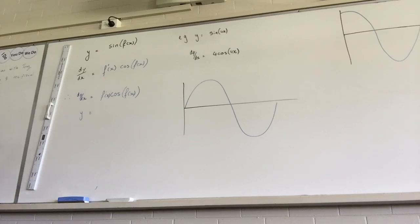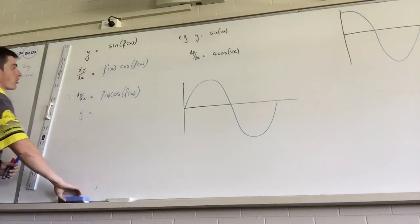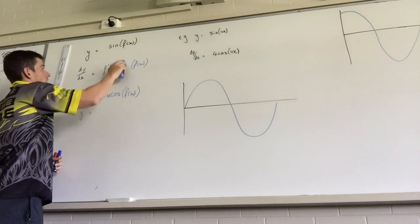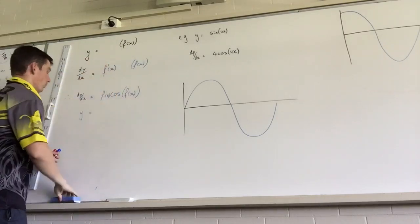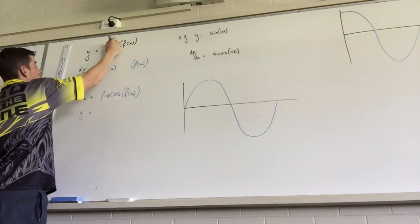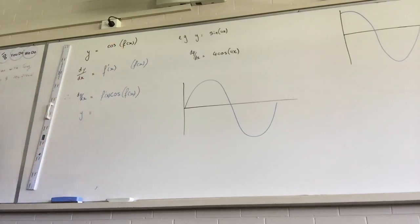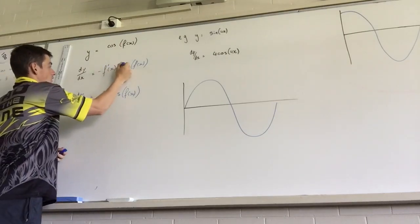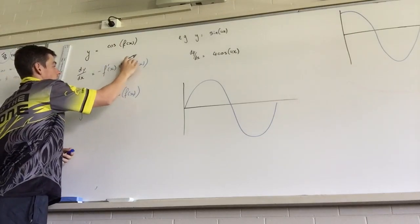Now, you'll know that if this was, I'll do a quick adjustment. If I had this as y equals cos f(x), I would have negative, this is sine, not cos. Does anyone know why that's the case?